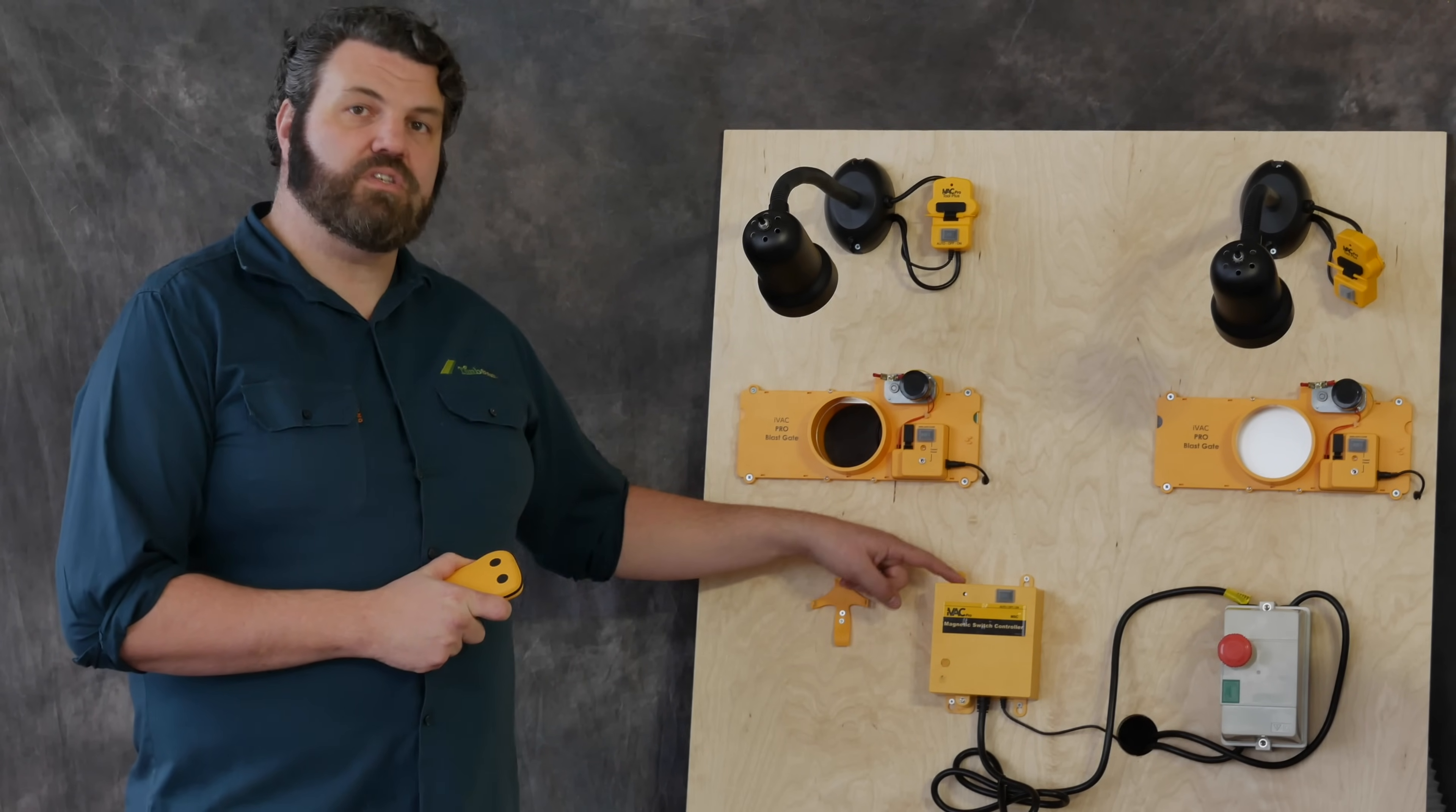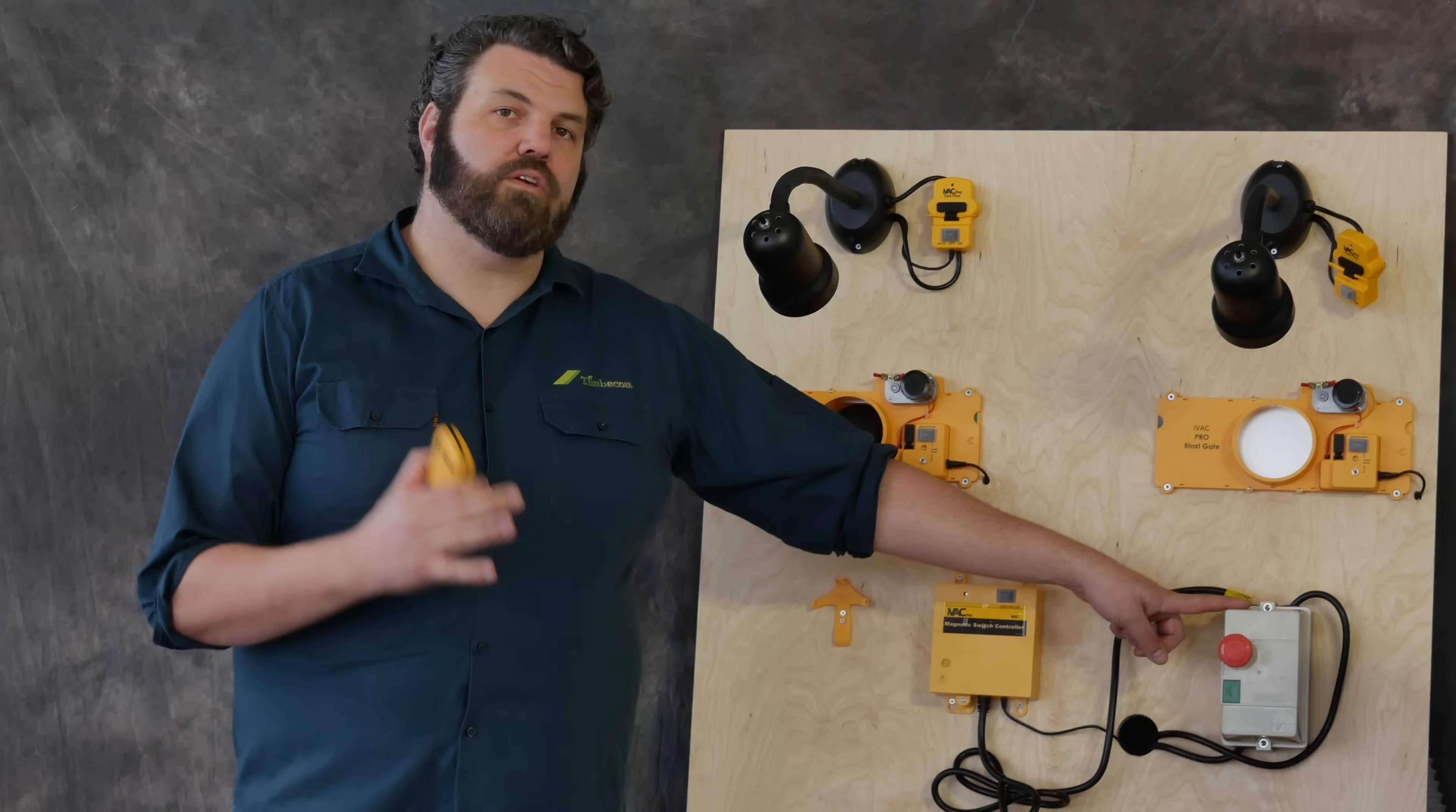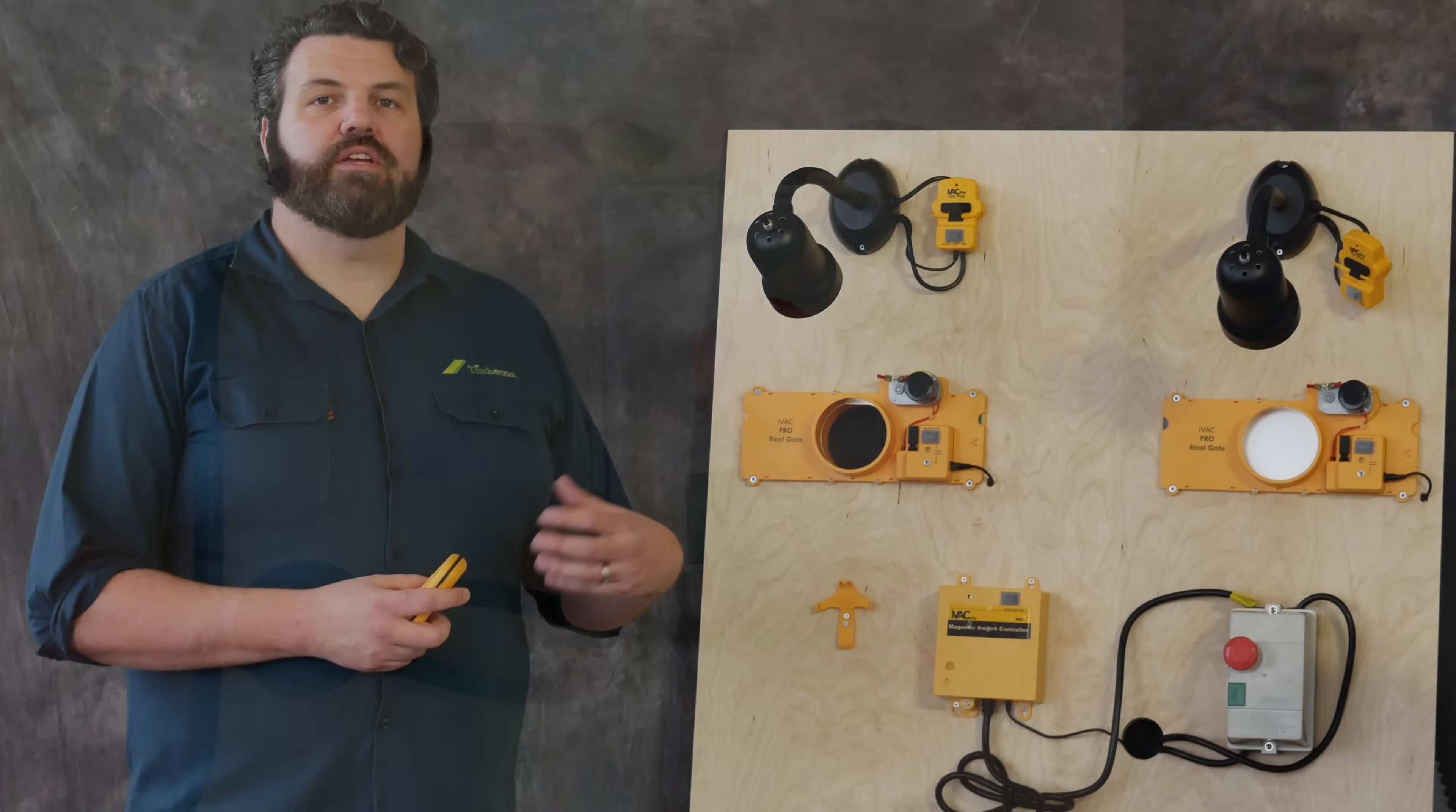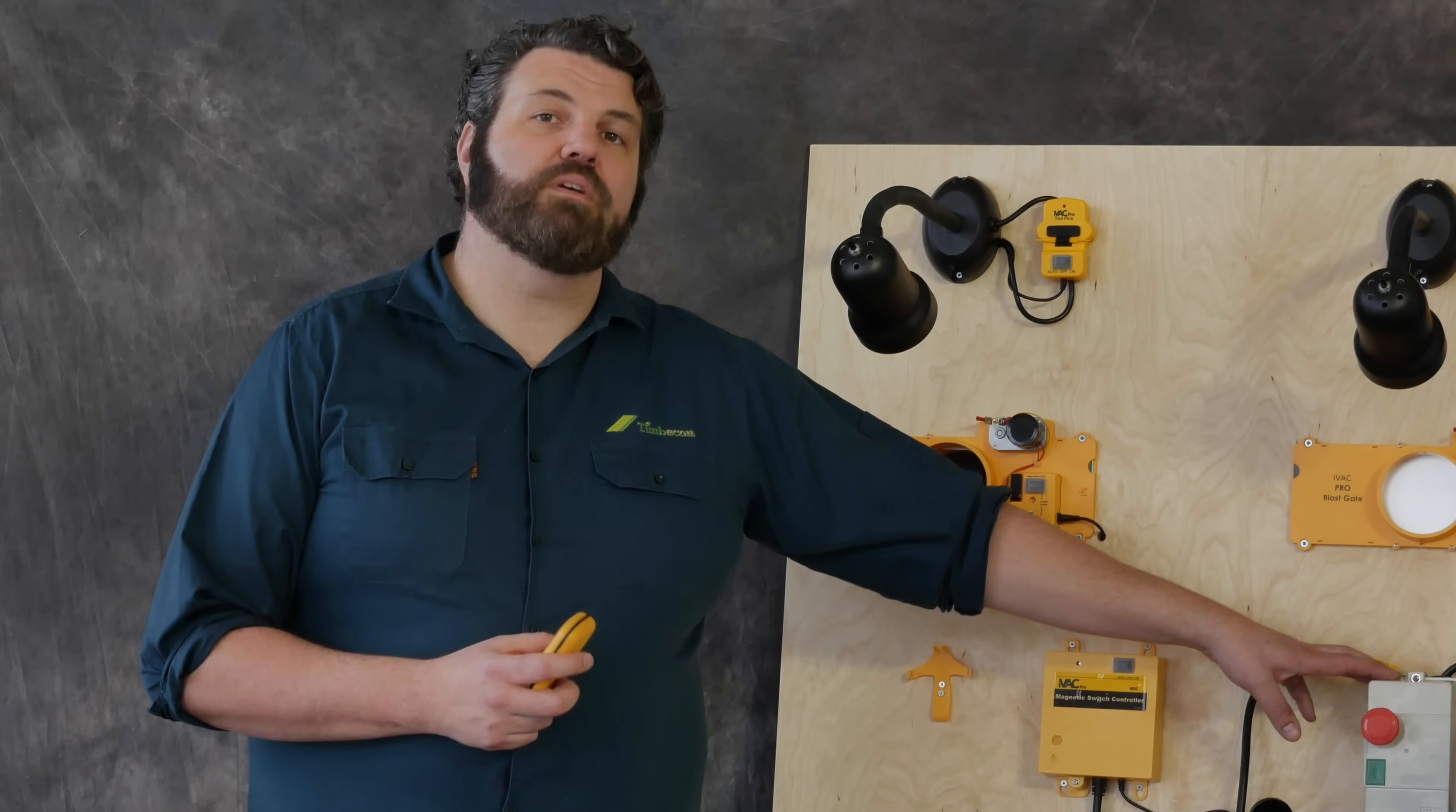So what that means is when the signal from the MSC is received to turn the dust extractor on, it tells the switch to activate the dust extractor. And vice versa, when you want to turn the dust extractor off, the signal is sent from the MSC and it controls the current flow in this switch. The benefit of this is that when you lose power to the whole system, the MSC and the NVR switch that you see here will be completely reset, which means you need to reset the system. The dust extractor won't turn on automatically.